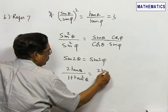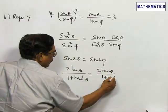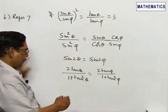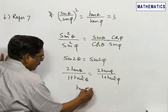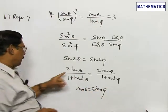Now there is a relation between tan θ and tan φ: tan θ = 3 tan φ. So in place of tan θ, I will replace it with 3 tan φ.